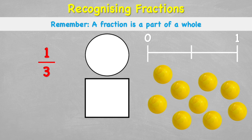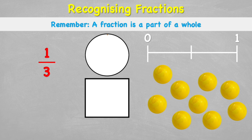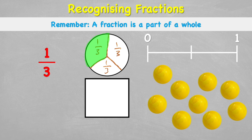Our last fraction to learn is one third. All it means is that we've cut our whole into three. With our pizza, cutting down from the top to the middle and splitting out to the sides gives three equal thirds. One third is more than a quarter but not as much as half.